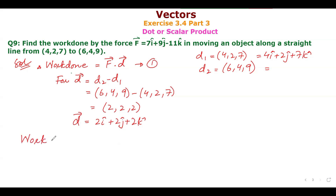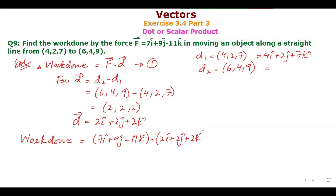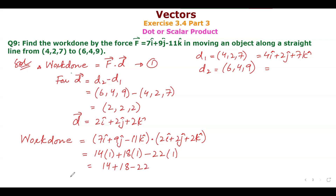Now putting values into the work done formula: F is given as 7i + 9j - 11k, and d = 2i + 2j + 2k. Taking the dot product: 7×2 = 14, 9×2 = 18, (-11)×2 = -22. So work done = 14 + 18 - 22 = 10 units.